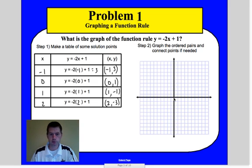Now we're just going to plot the points. The first one was negative 1, 3. So we go back 1, 1, 2, 3. So this was 3, this was negative 1.